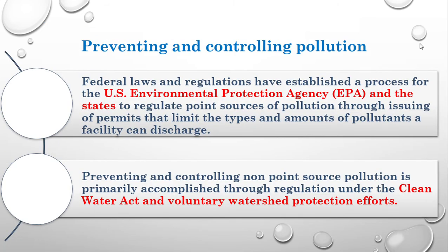Point sources of pollution can be controlled by the U.S. Environmental Protection Agency. The EPA has given certain acts and rules to prevent such pollution, and it can regulate point sources by issuing permits that limit the types and amounts of waste that factories and industrial companies can dispose of.